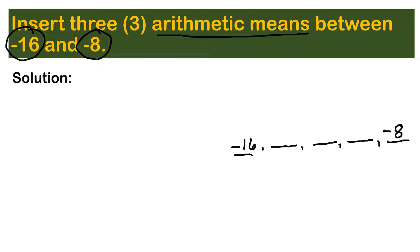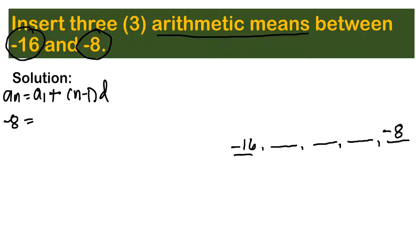The first thing you need to do is solve for the common difference. To do that, use the formula: a sub n equals a sub 1 plus (n minus 1) times d. Our a sub n, the last term, is negative 8. So: negative 8 equals negative 16 plus (5 minus 1) times d, since there are five terms.